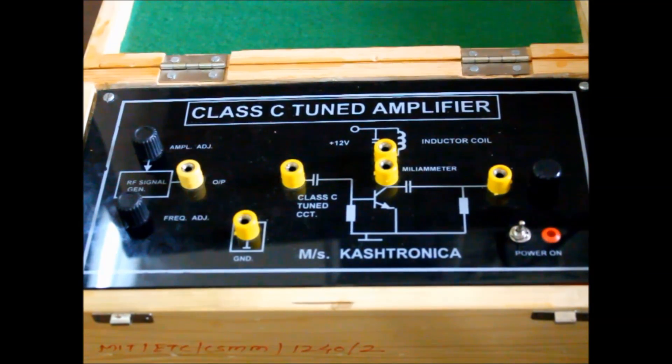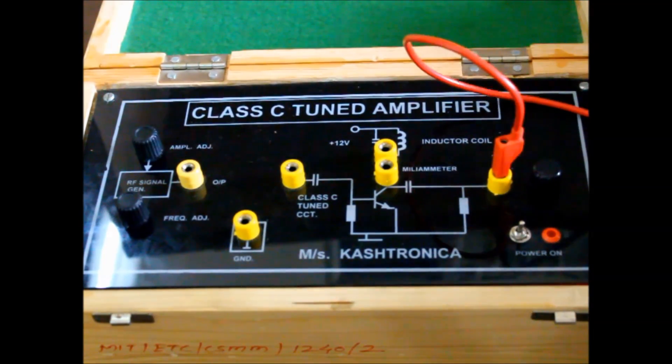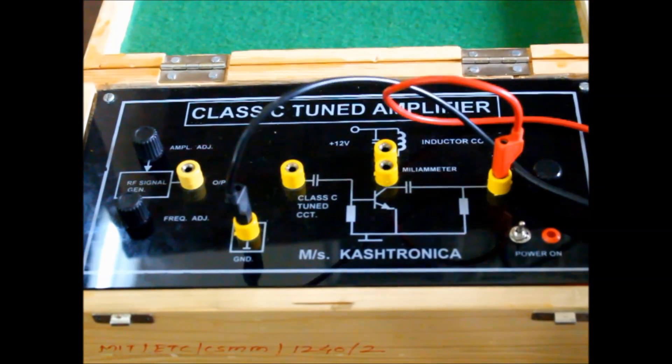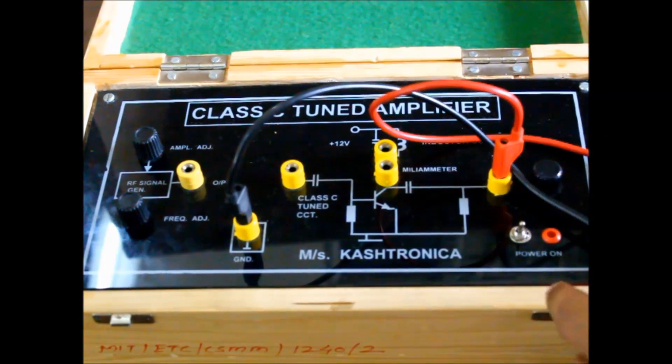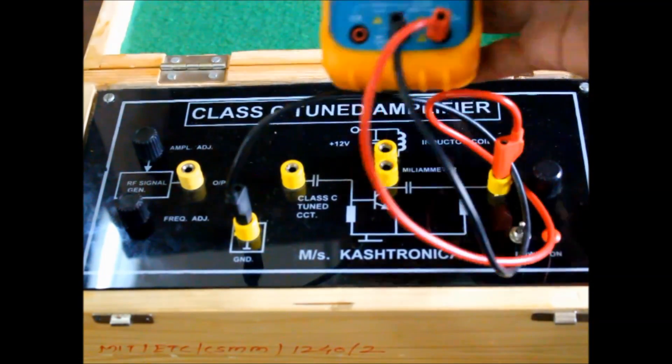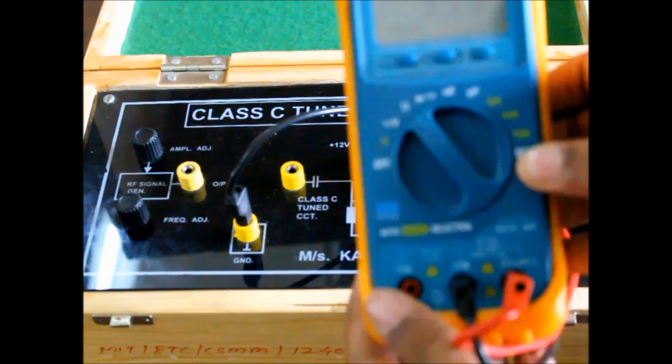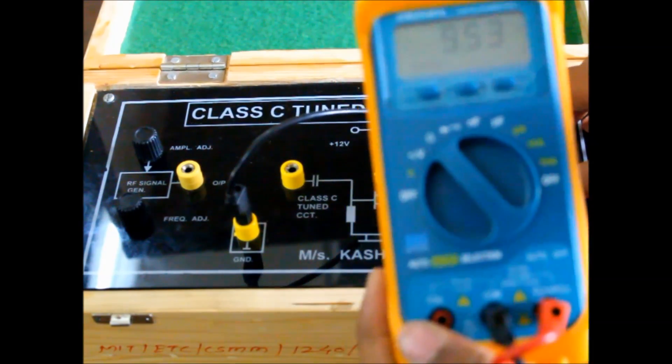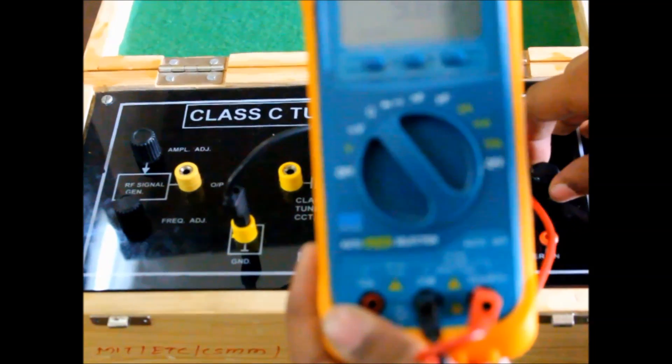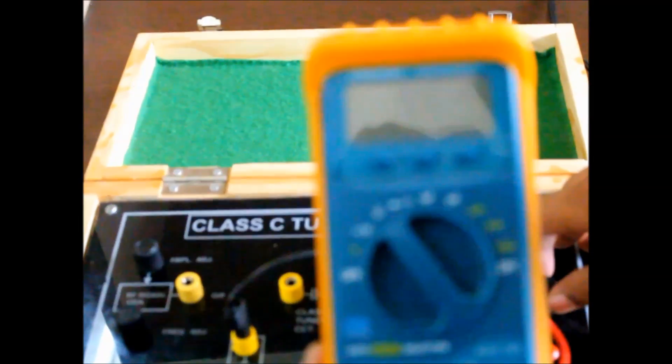So first we will measure the resistance. By adjusting this knob, you have to adjust the resistance at 6.8 kilo ohms.